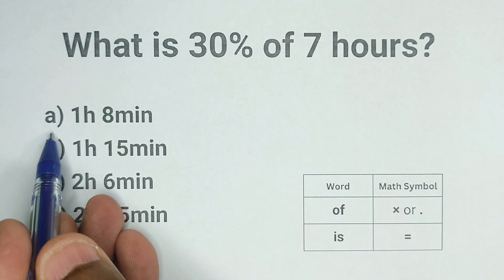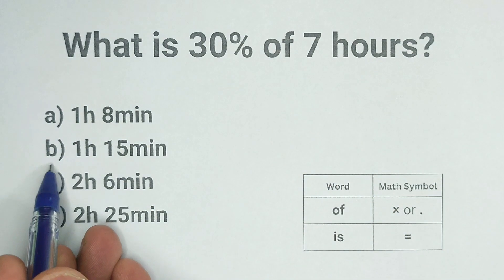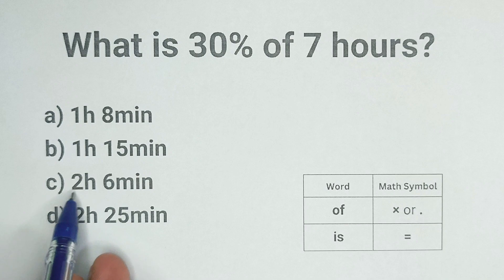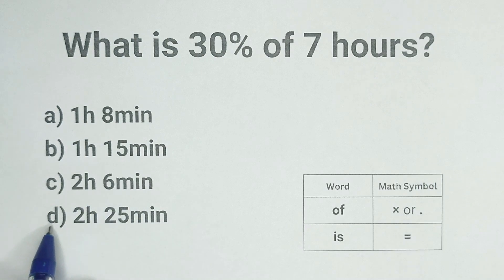There are 4 options. Option A: 1 hour and 8 minutes, B: 1 hour and 15 minutes, C: 2 hours and 6 minutes, and D: 2 hours and 25 minutes.